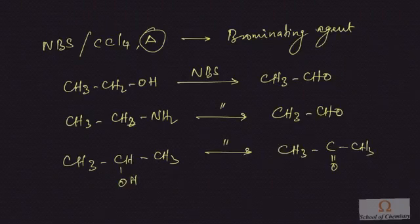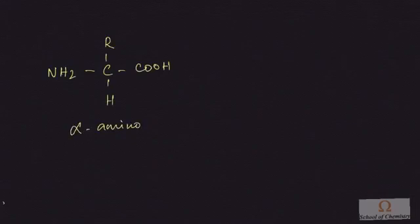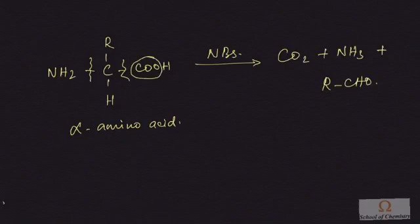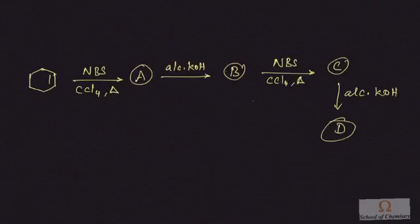When alpha amino acids are treated with NBS, the bond at the alpha carbon is broken: CO2 is released as carbon dioxide, and NH3 is also liberated as gas. Two gases are liberated along with an aldehyde as the product.